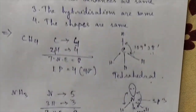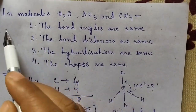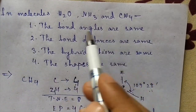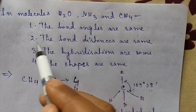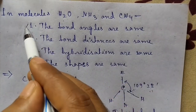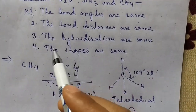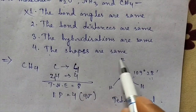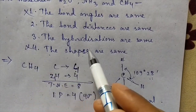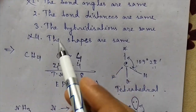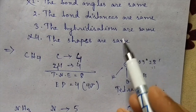Now we will come to our question. For these three molecules the bond angles are same — that is not right. The shapes are same — that is also not right. We have to see whether the bond distances are same or not.